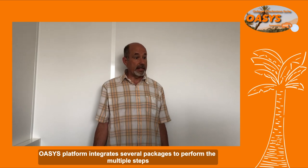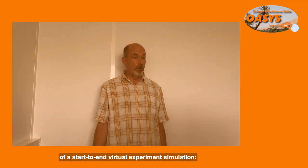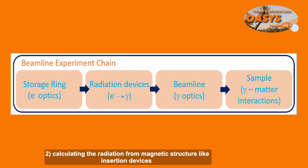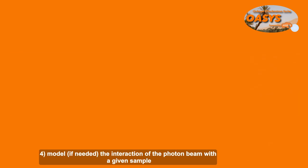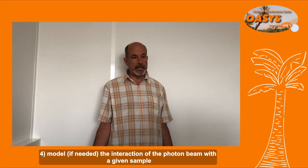The OASYS platform integrates several packages to perform the multiple steps of a start-to-end virtual experiment simulation: one, retrieve the parameters of the electron beam; two, calculate the radiation from magnetic structures like insertion devices; three, transport and modify the photon beam through beamline components; and four, model, if needed, the interaction of the photon beam with a given sample.